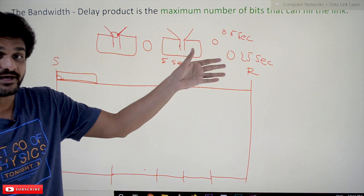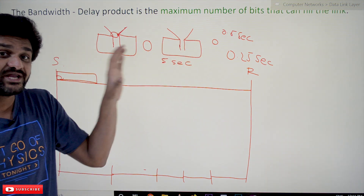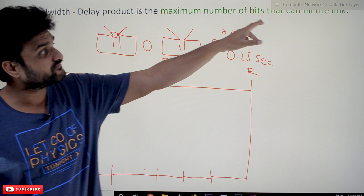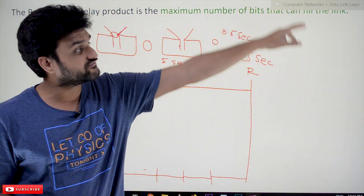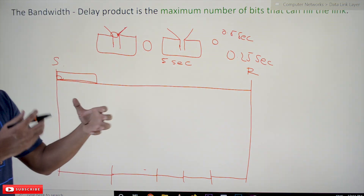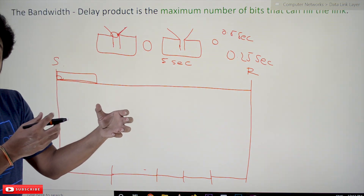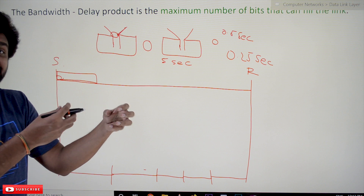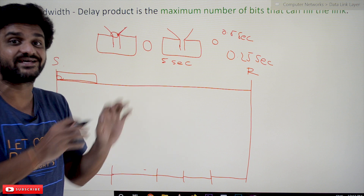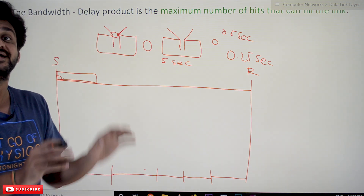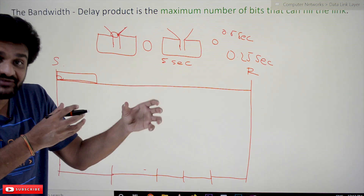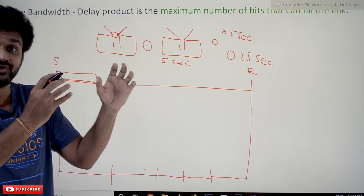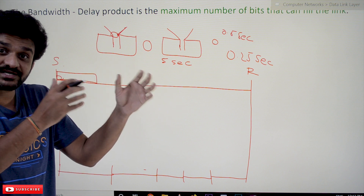So how many bits can we fill in the link? The maximum number of bits that can be in the link at once depends on two properties: the bandwidth of the channel and the delay of the channel.